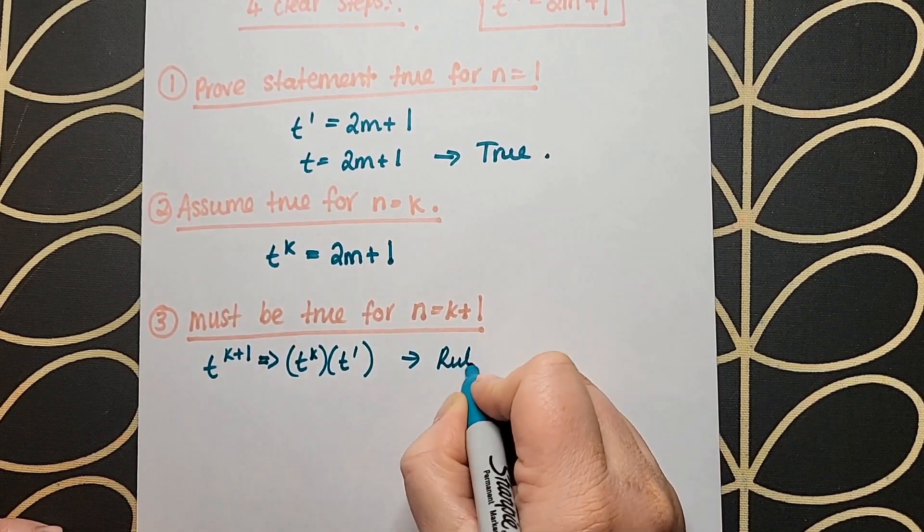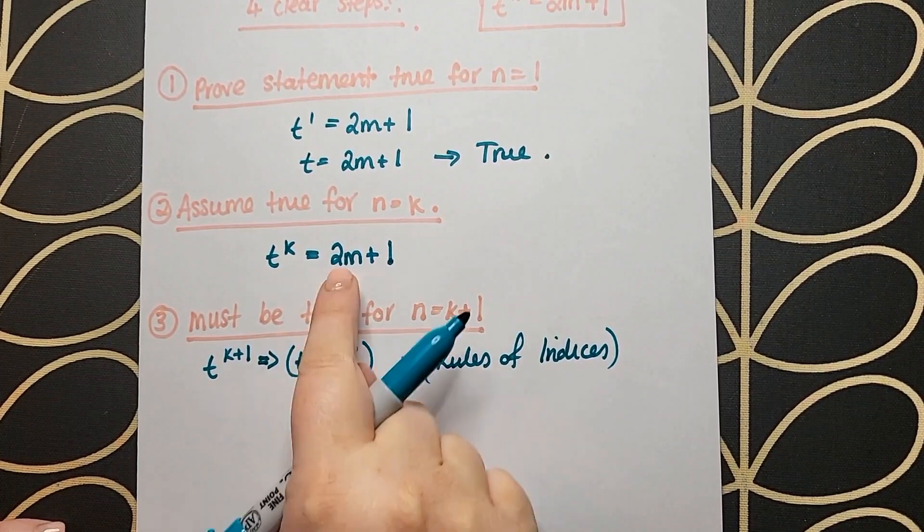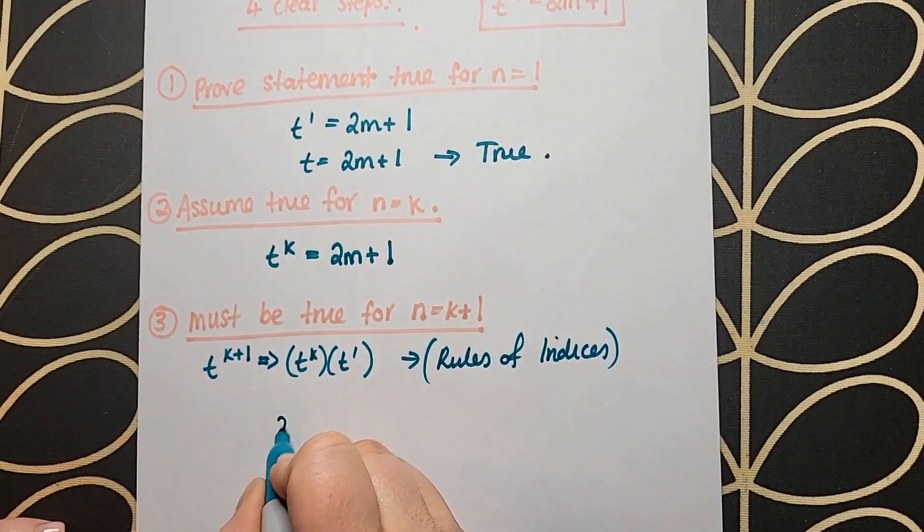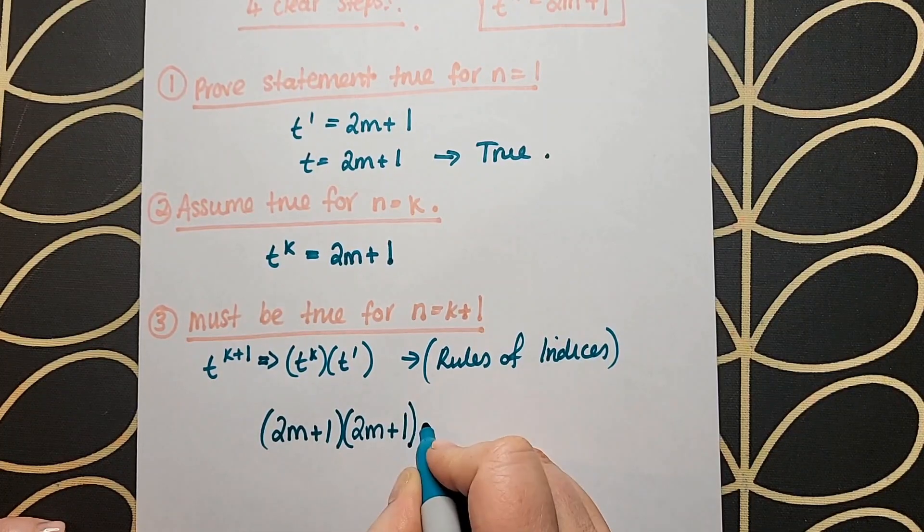Step 3 is where a lot of the work is actually done. It must be true for n equals k plus 1, but we're going to show it. So I get t to the power of k plus 1, which turns into t to the power of k multiplied by t to the power of 1. I use my rules of indices to create that.